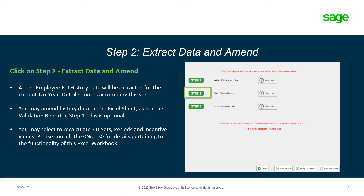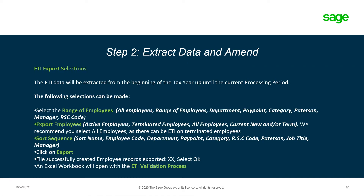Once the validation of the ETI setup and data is completed, you may continue to step two: extract data and amend. All the employee ETI history data will be extracted for the current tax year. Detailed notes accompany this step. You may amend history data on the Excel sheet as per the validation reports in step one, but this is optional. You may select to recalculate ETI sets, periods and incentive values. Please consult the notes for details pertaining to the functionality of this Excel workbook. Let's focus on the different ETI export selections on step two.